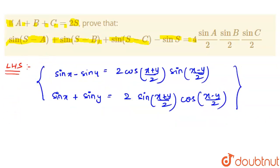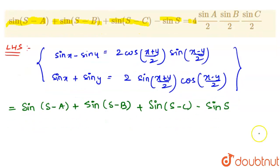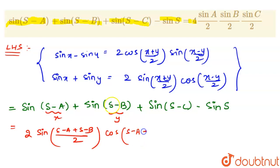The left hand side is sin(S minus A) plus sin(S minus B) plus sin(S minus C) minus sin S. We apply the second identity to the first two terms, where X is (S minus A) and Y is (S minus B). This gives us 2 sin((S minus A plus S minus B)/2) into cos((S minus A minus (S minus B))/2).